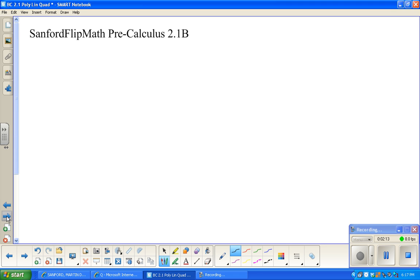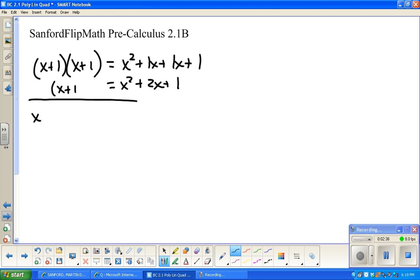Before I actually do that process, I want to take just a minute and remind you of some factoring issues and multiplying issues. If I do (x+1)(x+1), if I multiply this out, FOIL it out, x squared first times first, outer, inner, and last times last, this is x² + 2x + 1. Worth noting that this is the same thing as (x+1) squared.